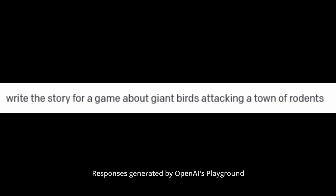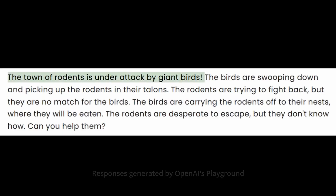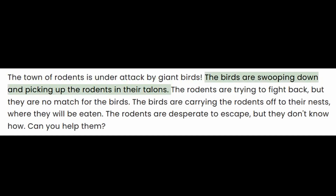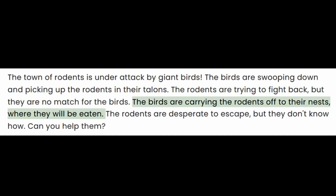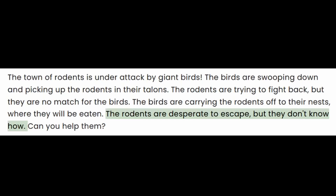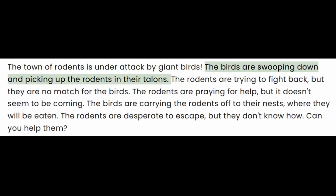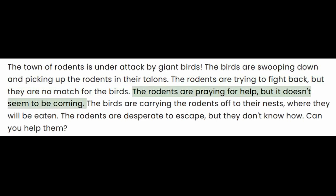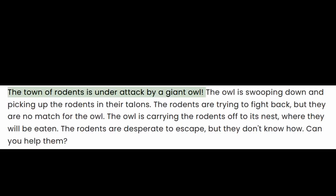Now let's try to create a story using artificial intelligence. My game is about rodents. The town of rodents is under attack by giant birds. The birds are swooping down and picking up the rodents in their talons. The rodents are trying to fight back but they are no match for the birds. The birds are carrying the rodents off to their nests where they will be eaten. Can you help them? I continued the prompt but had an idea to make the rodents Christian. Then I wanted the villain to be a giant owl. It forgot that the rodents were supposed to be Christians, so I reminded it, and here's the finished product.